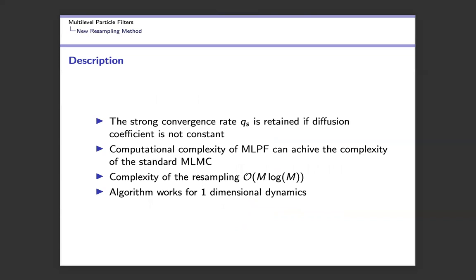There are several improvements using this method. The strong convergence rate Q_s is retained if the diffusion coefficient is not constant, and as a result the computational complexity of the multilevel particle filter can achieve the complexity stated in the standard multilevel Monte Carlo complexity theorem — not something in between. Theoretically, there is one issue: the complexity of the resampling is O(m log m) due to the sorting step needed to build the empirical cumulative distribution function. Additionally, this algorithm works specifically for one-dimensional dynamics and cannot be straightforwardly generalized to higher dimensions.